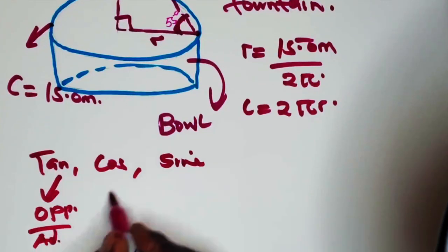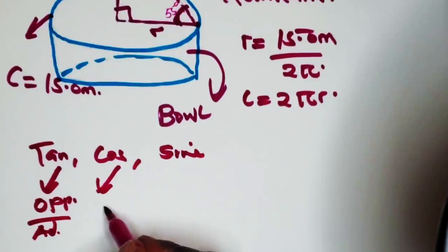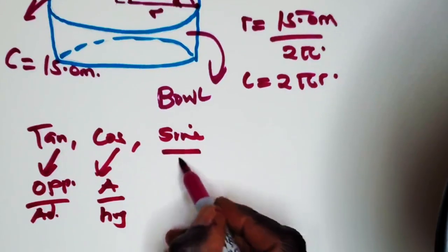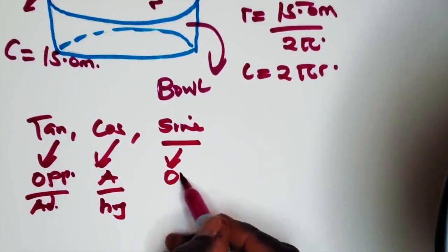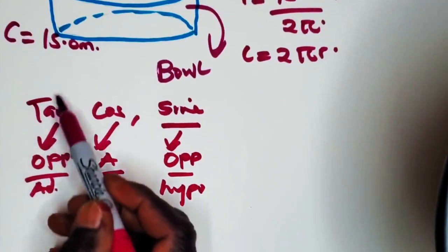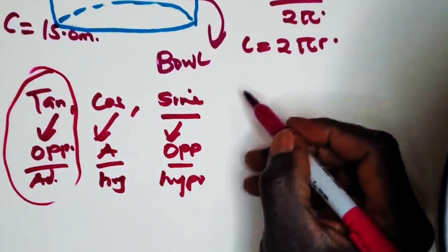Tan on the triangle is opposite of adjacent. Cosine is always adjacent of a hypotenuse. And the sine is opposite of a hypotenuse.